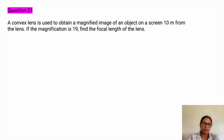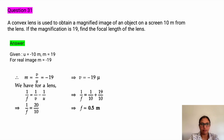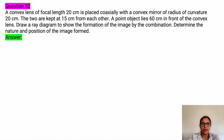A convex lens is used to obtain a magnified image of an object on a screen 10 meters from the lens. If the magnification is 19, find the focal length of the lens. The object distance u is taken as negative since it is on the left. With magnification v by u equal to 19, v equals 19u. Substituting into the lens formula gives the focal length as 0.5 meters.